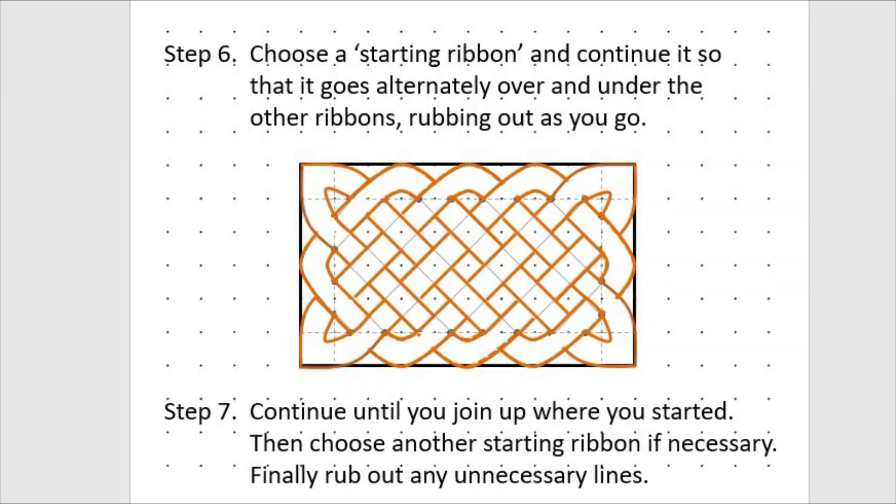Step six is choose a starting ribbon, and continue so that it goes alternatively over and under the other ribbons, rubbing out as you go. Now step six, I think it's probably the most tricky step, and takes a little bit of concentration. So if I were to start on the screen with this top corner, you can see I move along, and I'm going under a ribbon. I'll just go under the ribbon, and then I'm moving over the next ribbon, then under this ribbon, and over the next, and finally under the ribbon, and round. Because I went under the last, I go over the next, so this does take a little bit of concentration.